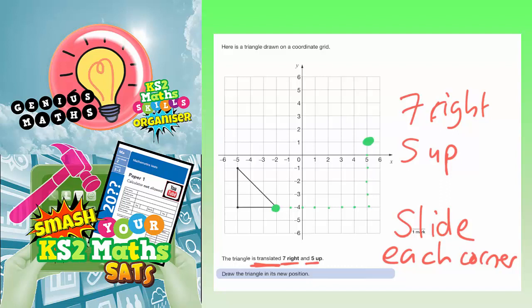Let's choose a different colour for this corner down at the bottom — we'll go red. So again, 7 to the right and 5 up — counting 7 to the right, then 5 up. So that corner is going to end up there.